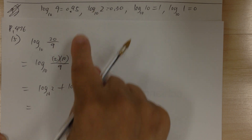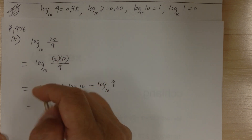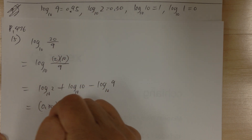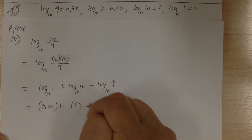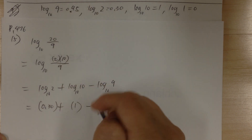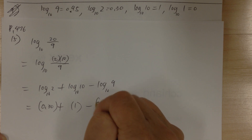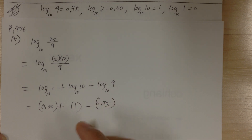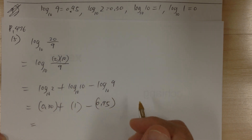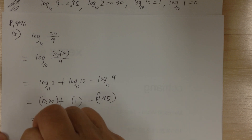Now substitute your numbers: log 2 is 0.30, log 10 is 1, log 9 is 0.95. Substitute and work it out: it equals 0.35.